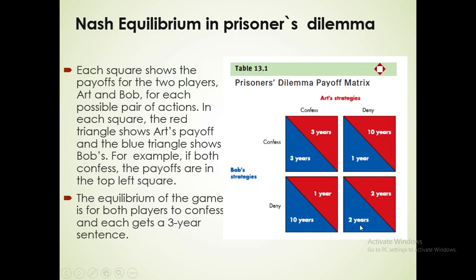Now, if Bob thinks about it: if Art confesses, Bob should also confess to avoid 10 years. If Art does not confess, Bob still benefits by confessing — he gets 1 year instead of 2. So it is obvious that Bob will go with confession, keeping this situation in view. Confession is Bob's dominant strategy.